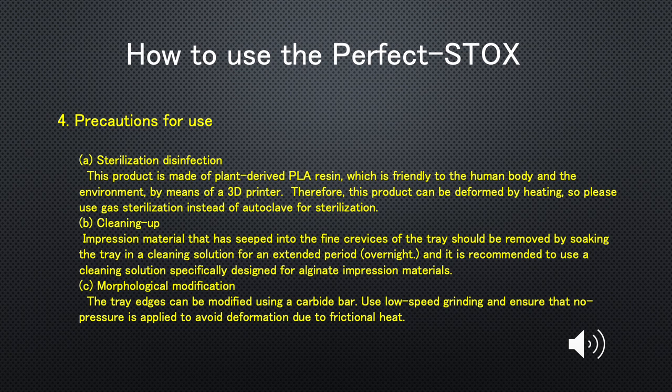C. Morphological Modification: The tray edges can be modified using a carbide bar. Use low-speed grinding and ensure that no pressure is applied, to avoid deformation due to frictional heat.